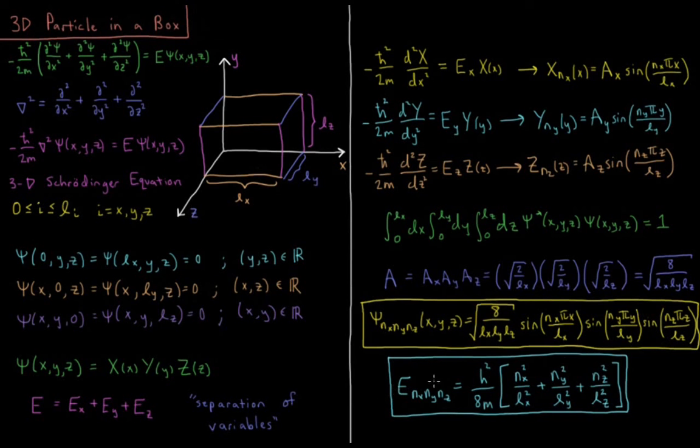And now our energy is a sum of the energy from each of these three dimensions, from each of these three individual Schrodinger equations in one dimension. It's h squared over 8 times the mass of the particle. And then from each dimension, quantum number squared over length of the box in that dimension squared.